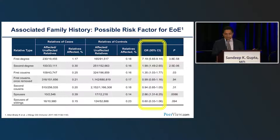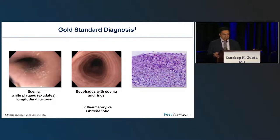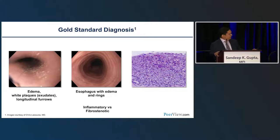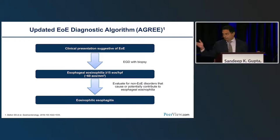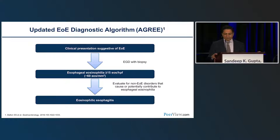To diagnose EOE, you need an endoscopy. Endoscopic features are divided into inflammatory changes and fibrostenotic changes — rings, strictures, and narrow-caliber esophagus — along with biopsy showing eosinophils. The current diagnostic algorithm: a patient with symptoms suggestive of EOE should undergo endoscopy, and if there are more than 15 eosinophils per high-power field, that supports a diagnosis of EOE. Currently, in the presence of symptomatology and more than 15 eosinophils per high-power field on endoscopy, that is EOE.